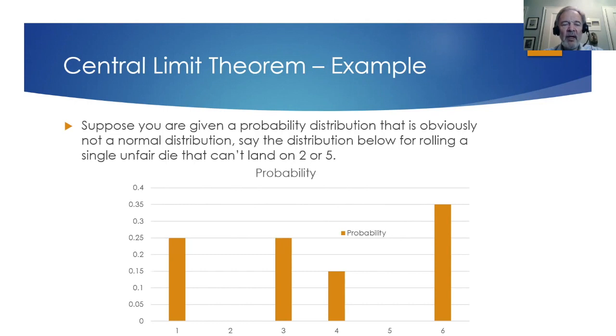Notice the probability of rolling a 1 is 0.25, of 2, 0, of 3, also 0.25, of 4, 0.15, of 5 again 0, and of 6, 0.35.